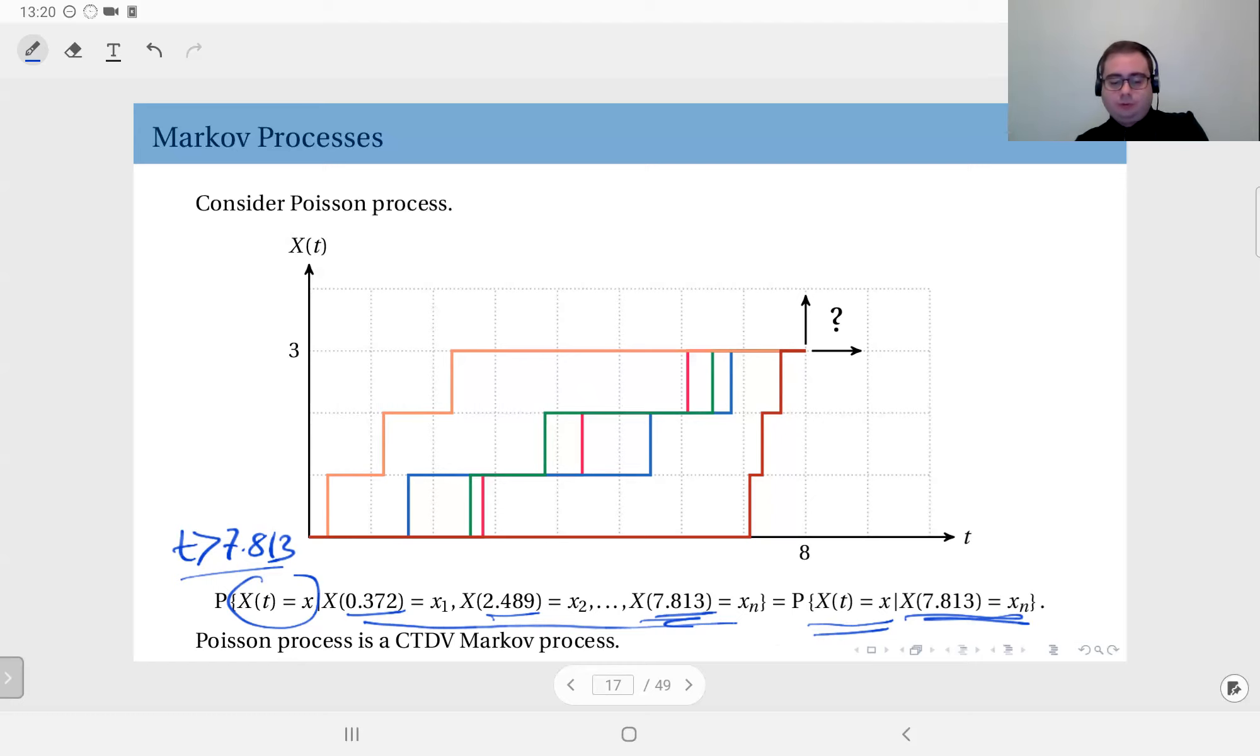So Poisson process as you see is also a Markov process, but it's a continuous time discrete valued Markov process.